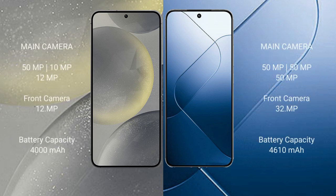Samsung Galaxy S24 features a triple camera setup: 50 megapixels plus 10 megapixels plus 12 megapixels, and a 12 megapixel front camera. Xiaomi 14 features a triple camera setup: 50MP plus 50MP plus 50MP, and a 32 megapixel front camera.